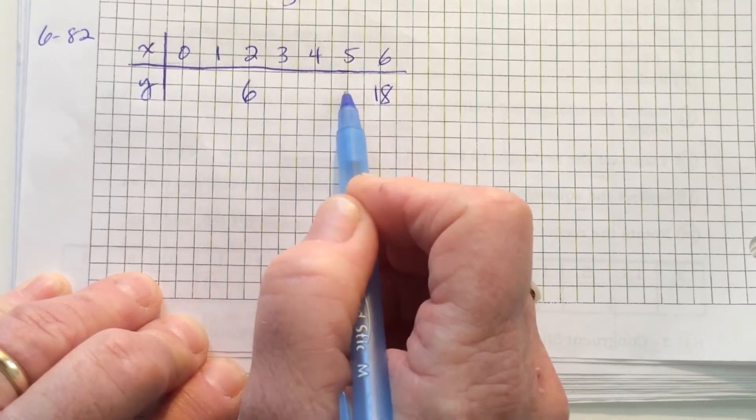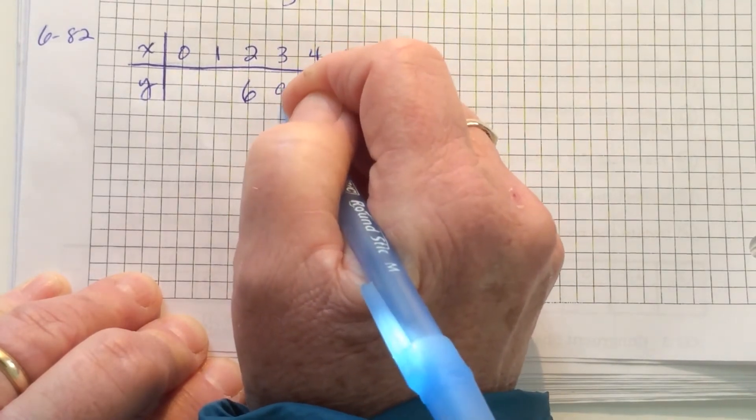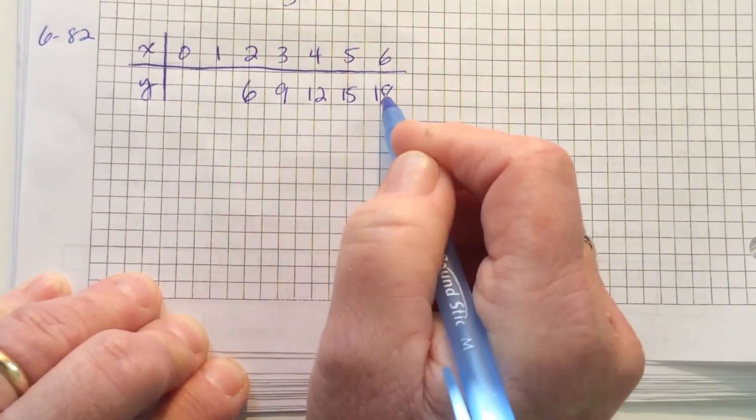So 3, 6, 9, 12. Plus 3, plus 3, plus 3, and it works out.